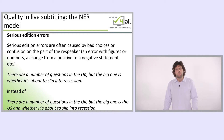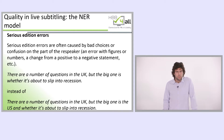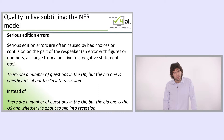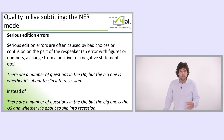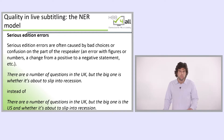Serious addition errors are often caused by bad choices or confusion on the part of the respeaker, for example an error with figures or numbers, or a change from a positive to a negative statement. An example: 'there are a number of questions in the UK, but the big one is whether it's about to slip into recession' — instead of 'there are a number of questions in the UK, but the big one is the US, and whether it's about to slip into recession.' Again, it is difficult for a deaf viewer with profound or severe hearing loss to know there is an error.